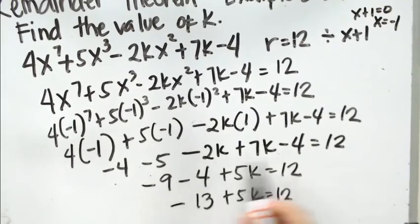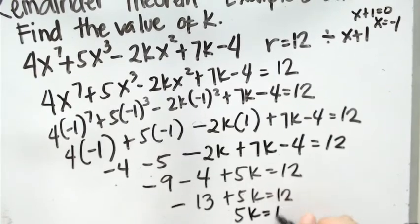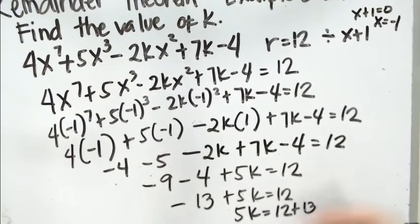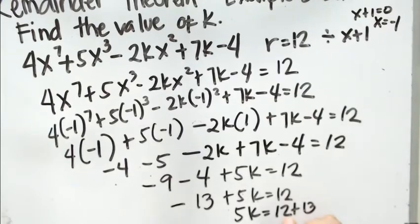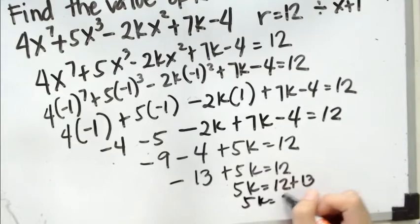Negative 9 minus 4 is negative 13, plus 5k equals 12. Then we transpose negative 13 to the other side: 5k equals 12 plus 13. 12 plus 13 gives us 5k equals 25.